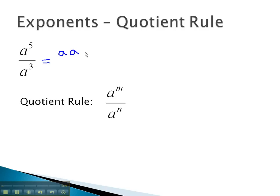a to the 5th in the numerator means we are multiplying 5 a's together. a to the 3rd in the denominator means we are multiplying 3 a's together.